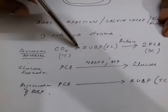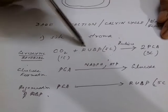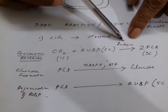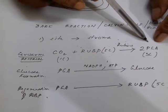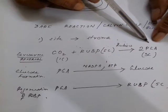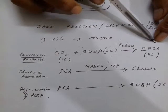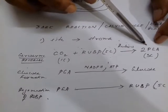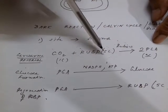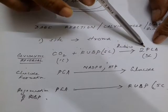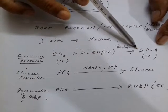RUBP is a 5-carbon intermediate compound present in the stroma, which is continuously formed in the dark reaction itself. CO2 is absorbed and in the presence of an enzyme called rubisco, it is converted to phosphoglyceric acid (PGA). One carbon plus five carbon forms two 3-carbon PGA molecules — PGA is the first stable compound formed in photosynthesis.